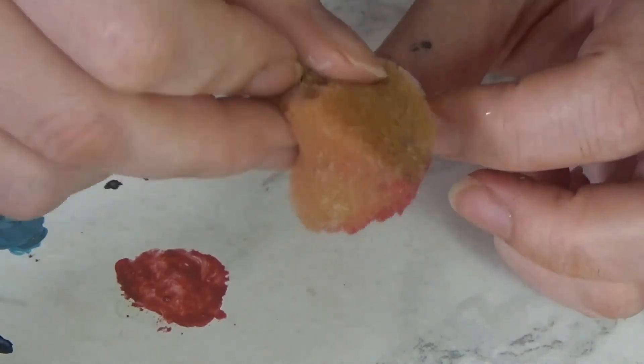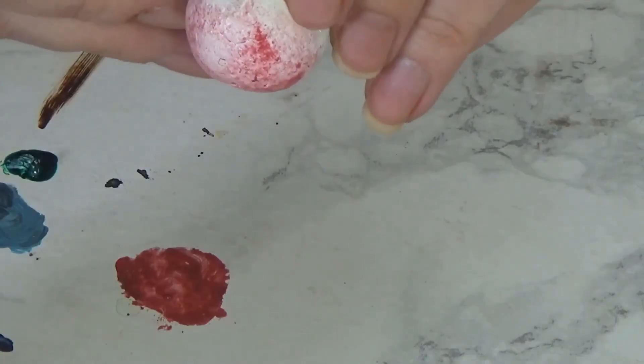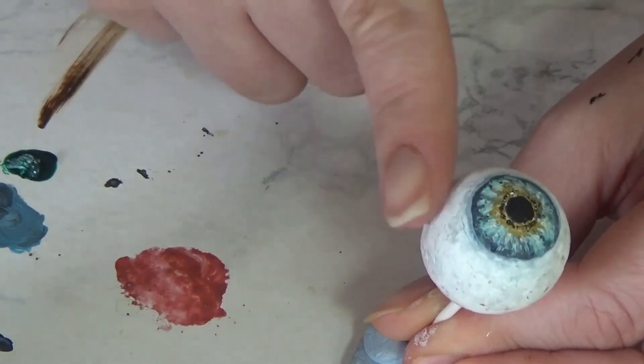Obviously, if you want a really bloodshot eye, which is what I'm going for here, then you would add more red. If you want a clearer eye, then you go for less red.